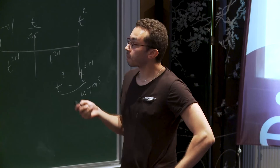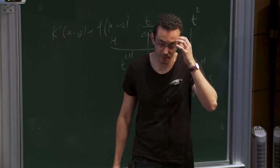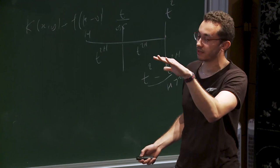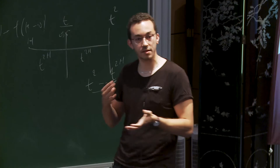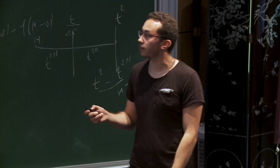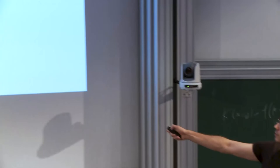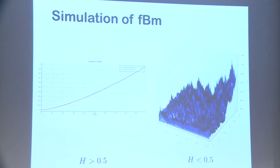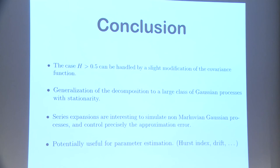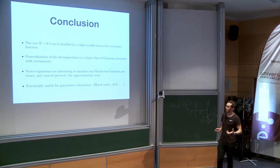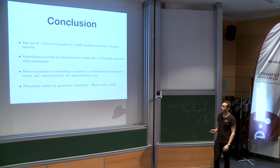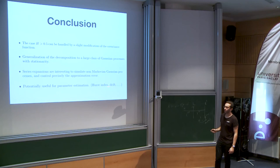The takeaway: these series expansions are very useful for simulation. You truncate the series by keeping N harmonics — you're discretizing in frequency, not in time, so the result is continuous. The number of harmonics needed for a given precision can be controlled exactly by a formula. Additionally, these series could have uses in estimation of the Hurst index or drift. It's not easy since the basis isn't orthonormal, but if one can estimate the C_k's, one could estimate the Hurst index or other parameters.